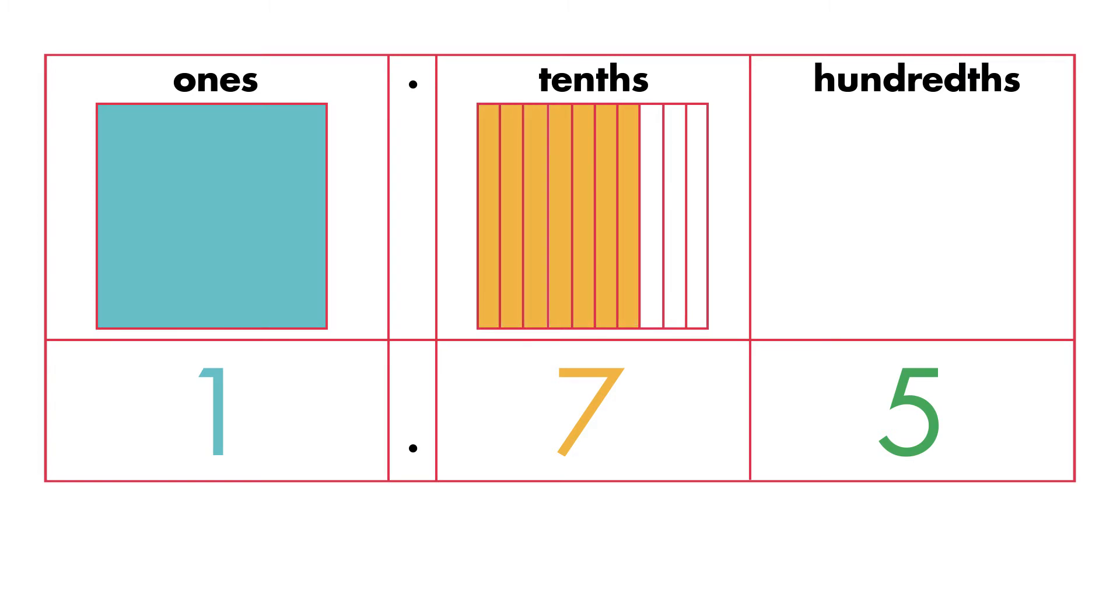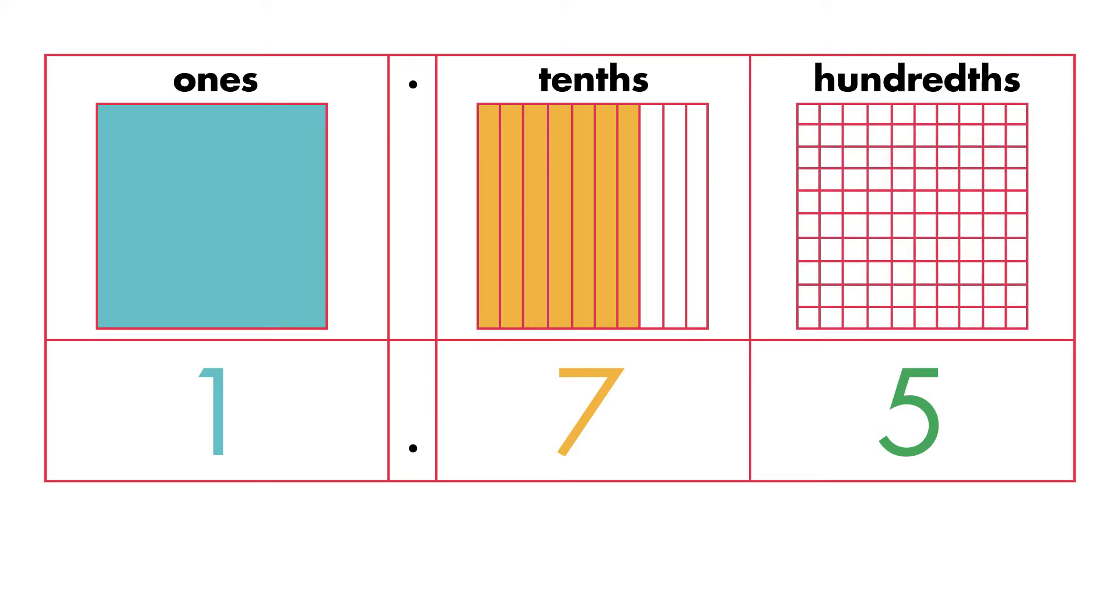To show how many hundredths we have, we divide one whole unit into 100 equal parts. 1 and 75 hundredths has 5 hundredths. We shade 5 parts of the model. We can use these models when multiplying decimals.